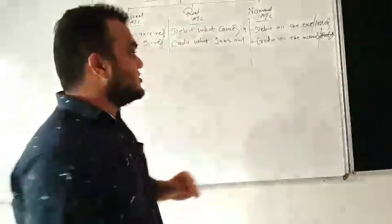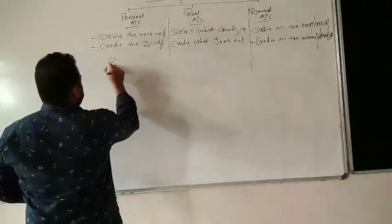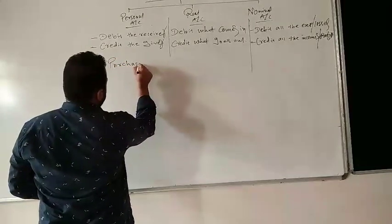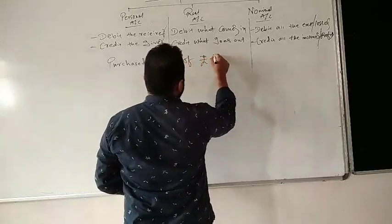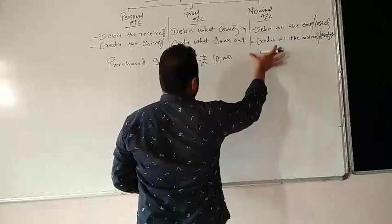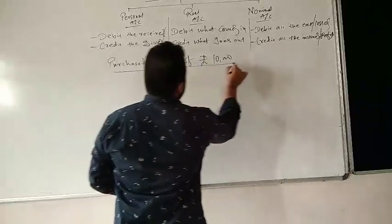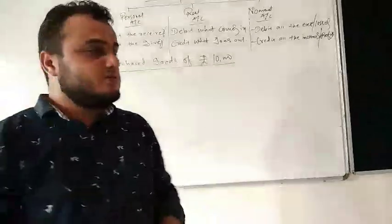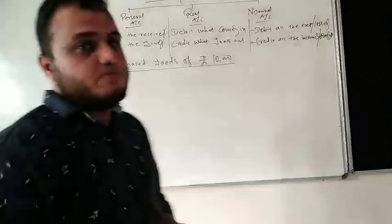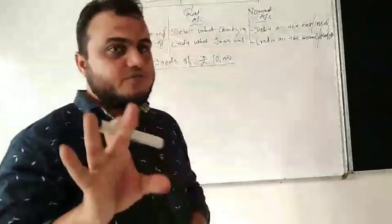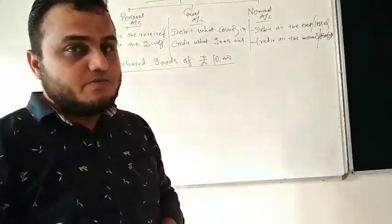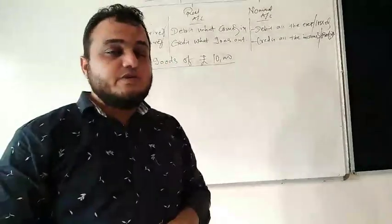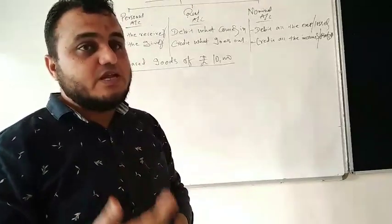Now let me write one transaction: Purchase goods of rupees 10,000. We apply the twofold effect. First, we check whether the transaction is economic or not. Since goods have been purchased, which directly affects the business, this is an economic transaction.